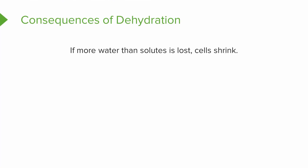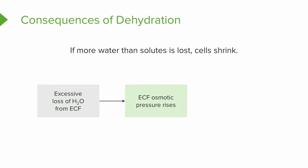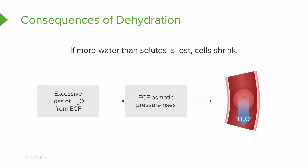The consequences of dehydration are that as solutes are lost, the cells in our body will shrink. This happens because the excessive loss of water from our extracellular fluid means that the extracellular osmotic pressure is going to rise. In response to this rise in osmotic pressure, the cells will lose water to the extracellular fluid by osmosis, causing our cells to shrink.